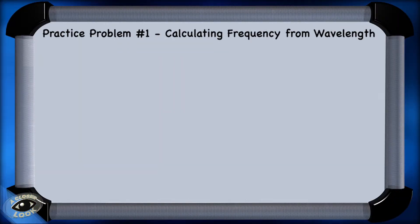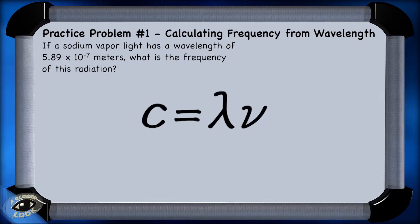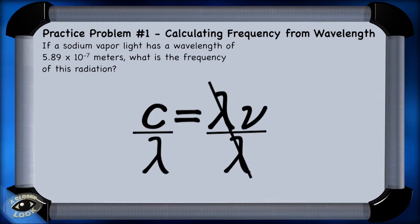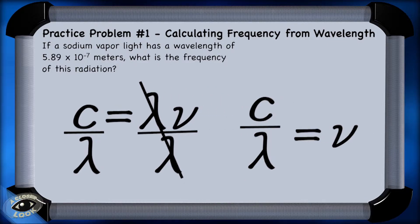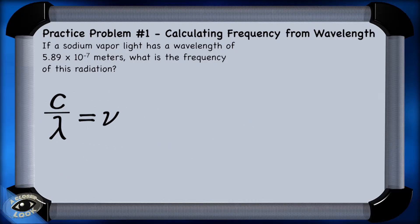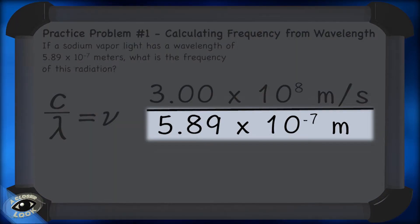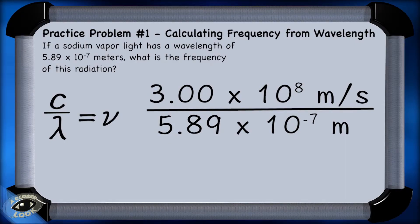Let's look at a couple of practice problems to calculate wavelength or frequency using the speed of light equation. Problem one gives us wavelength and asks us to solve for the frequency of a sodium vapor light. We'll rearrange the speed of light equation for frequency by dividing both sides of the equation by the wavelength, getting frequency by itself. We can then plug in the values we know. The speed of light is 3.00 times 10 to the eighth meters per second, and the wavelength is 5.89 times 10 to the negative seventh meters.